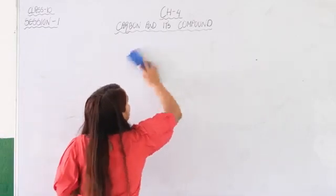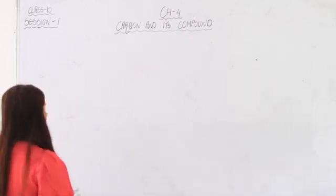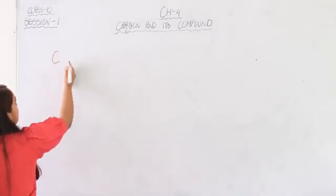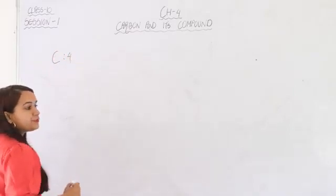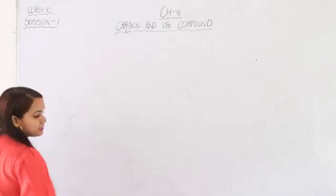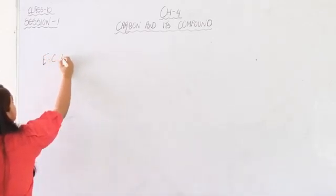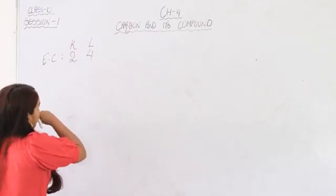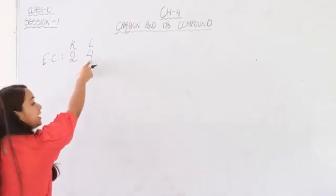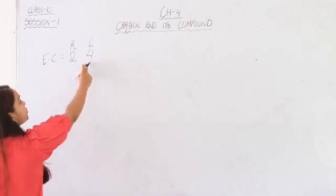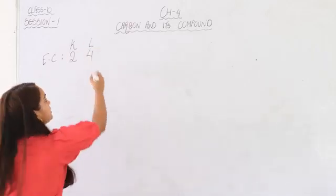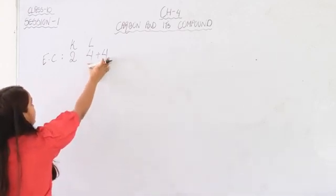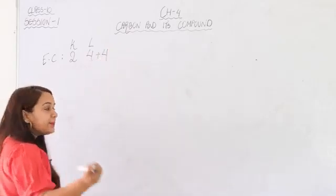Now let us see why carbon compounds cannot form ionic bonds and are said to form only covalent bonds. Carbon has a valency of 4, meaning it has 4 outermost electrons. In order to attain stability, looking at the electronic configuration — K shell 2 electrons, L shell 4 electrons — it needs 8 electrons in the outermost shell, so it needs to accept 4 more electrons from some other element or atom.